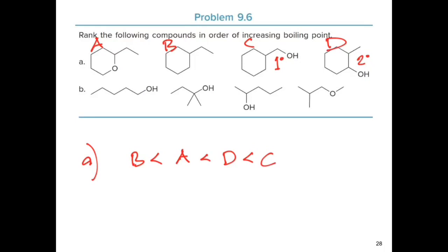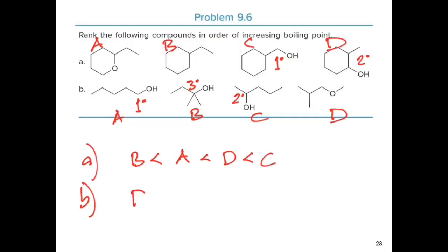For the second problem, we have three different alcohols and an ether. The first alcohol is primary, the second is tertiary. Because the ether is incapable of hydrogen bonding, it has the least boiling point. The ranking in order of increasing boiling point is: D (ether) less than B (tertiary alcohol) less than C (secondary alcohol) less than A (primary alcohol), since A is a primary alcohol with the greatest boiling point.